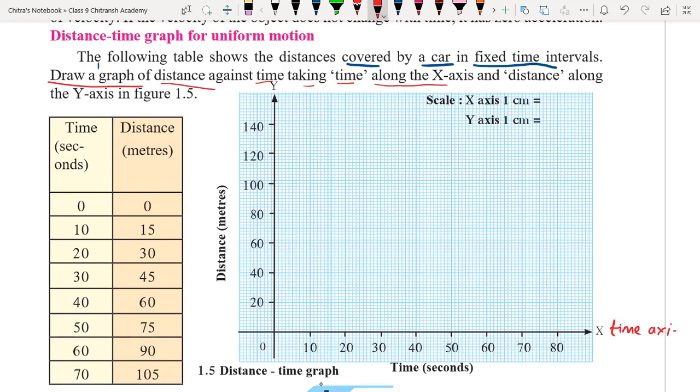And y-axis is called the distance axis here. So see, first whenever we are going to write the graph, first we have to decide the scale. See according to the given data, data is given here on time which is in seconds and distance which is in meters. So for first second the distance will be 0, for 10 seconds 15 meters, then for 20 seconds 30 meters, like this. So here we have the data which is already given.